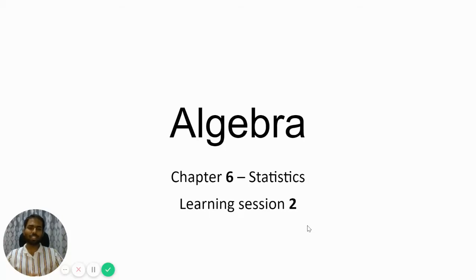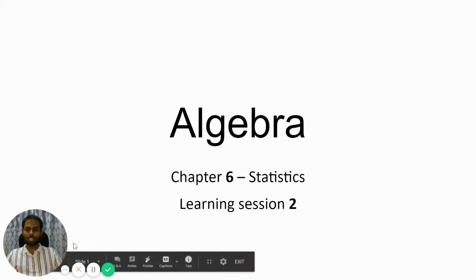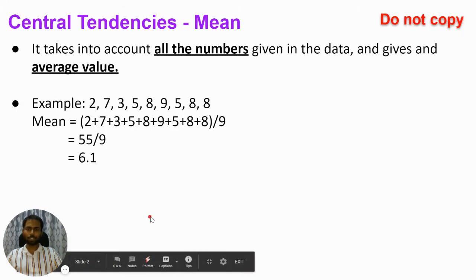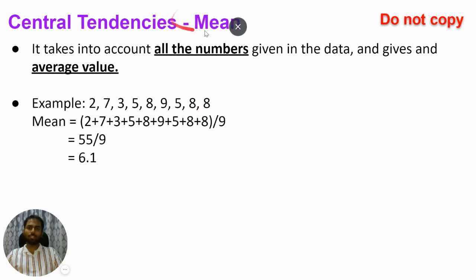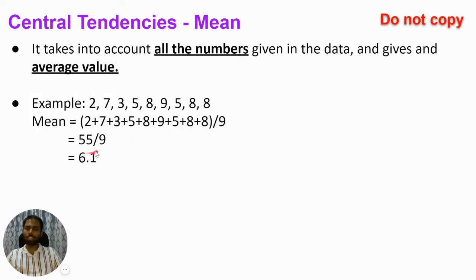Hello and welcome to learning session number two of chapter number six of algebra, which is Statistics. In the last learning session we learned about mean - it is a number which takes into account all the numbers given in the data and gives the average value. To find mean, you add all the numbers and divide by how many you have added.